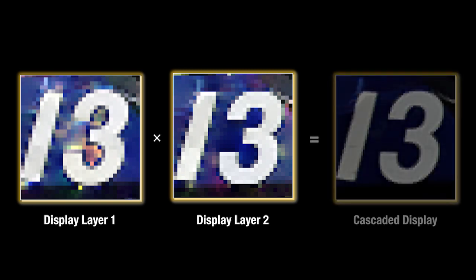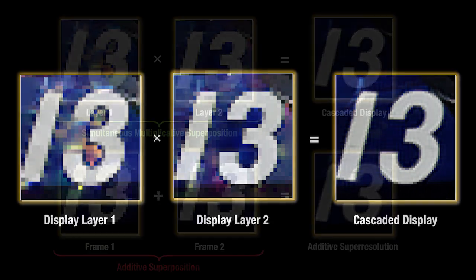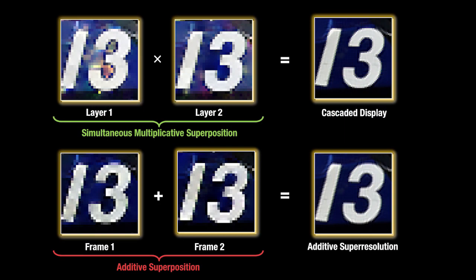A pair of spatial light modulators is stacked on top of one another, subject to a sub-pixel lateral displacement. By optimizing the patterns displayed on these multiplicative layers, cascaded displays appear with enhanced resolution. We emphasize that prior super-resolution displays primarily exploit additive rather than multiplicative superpositions.